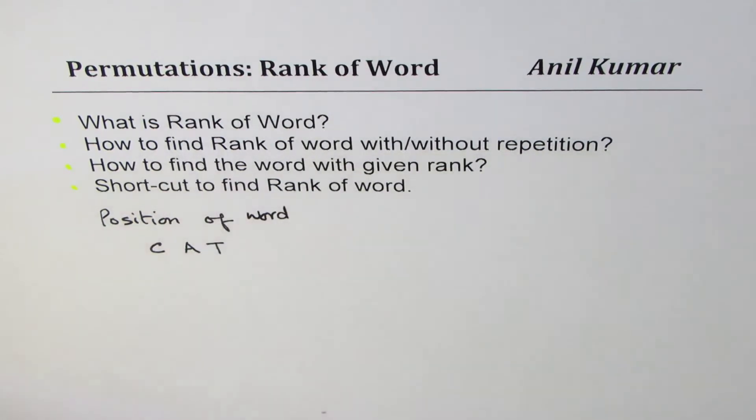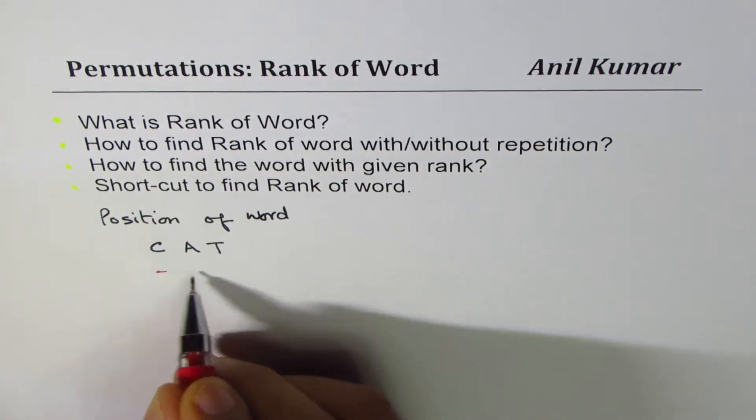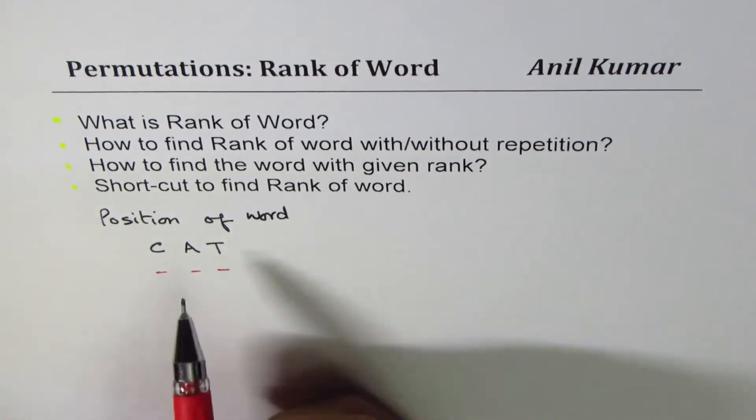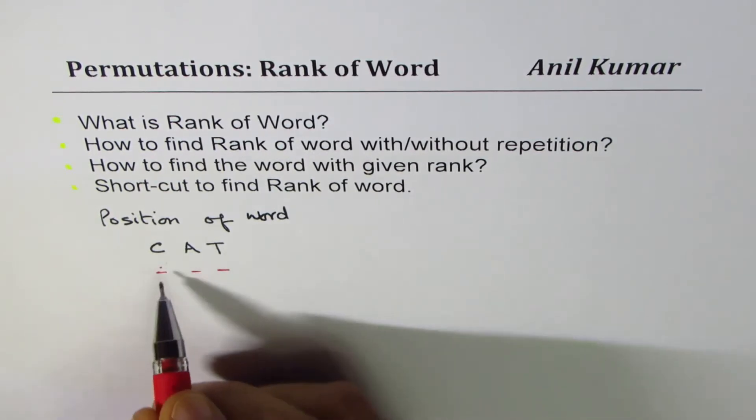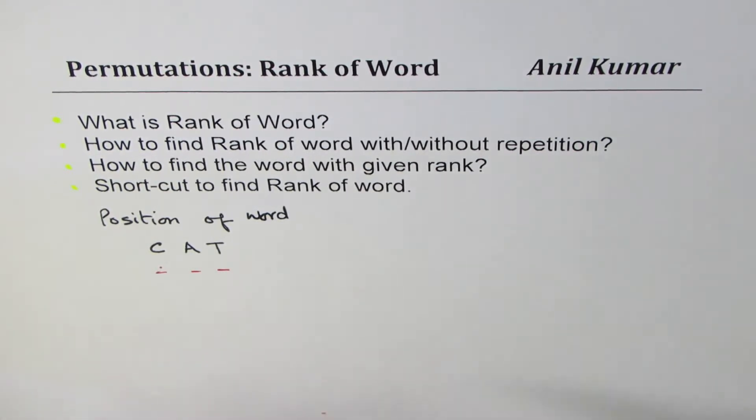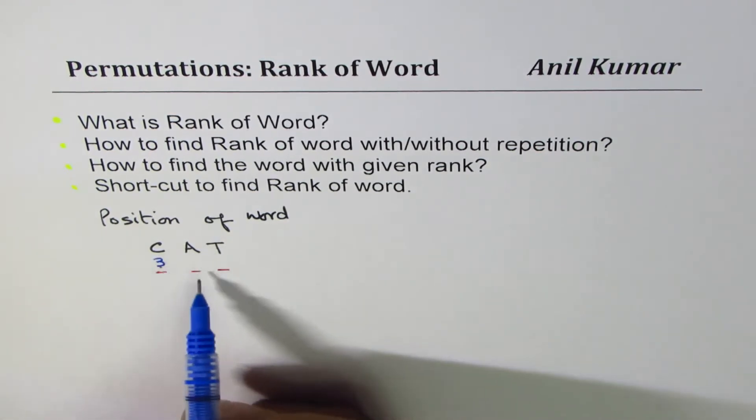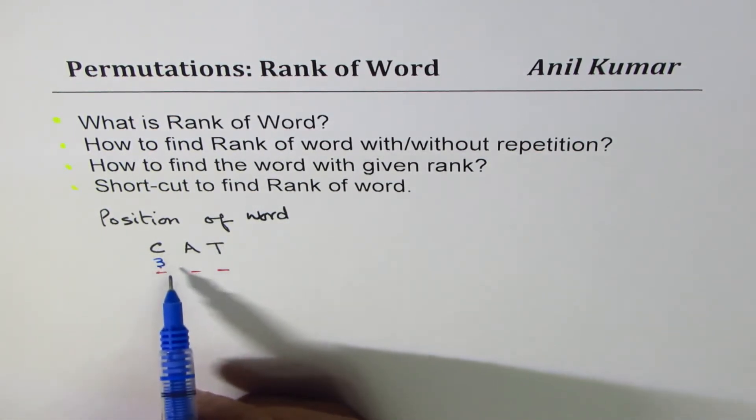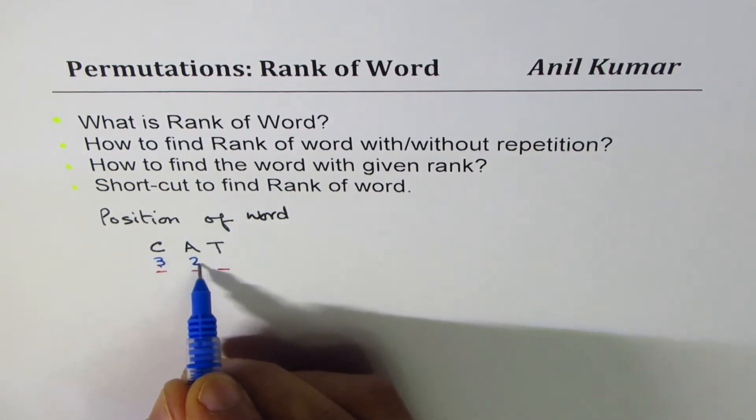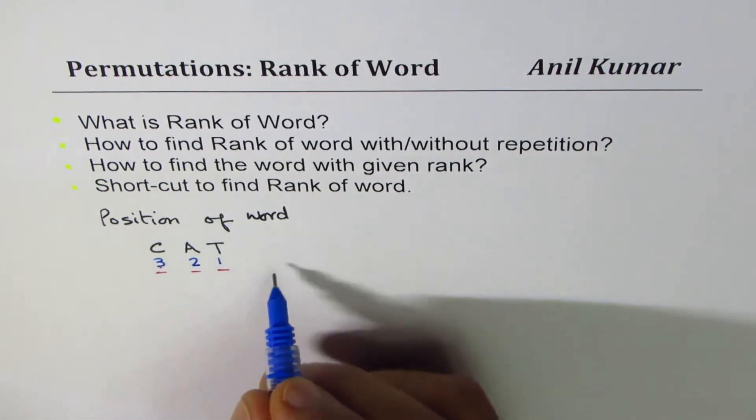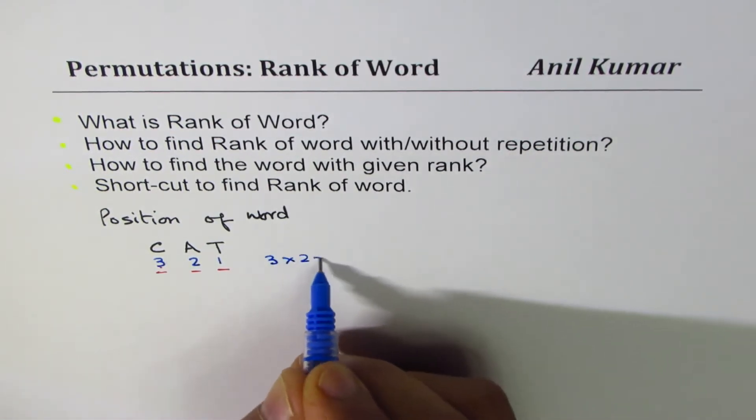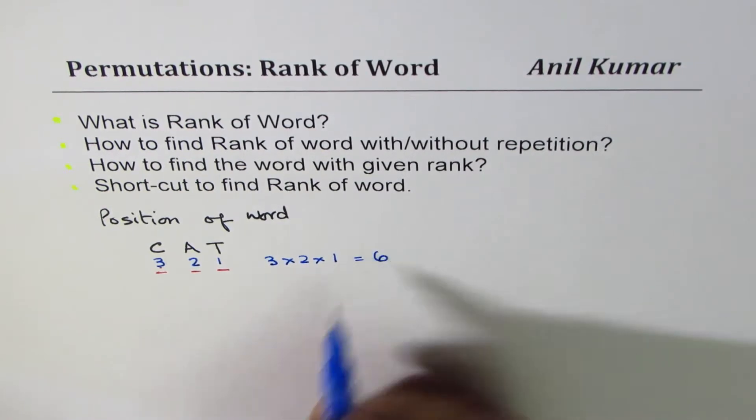Basically we have three positions to fill in. As you know from permutations, here we can put any of these three letters. Once we place one letter in this position, we are left with two, and then with one. So if we count, we can get three times two times one, which is six words.